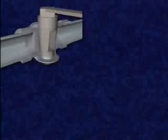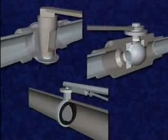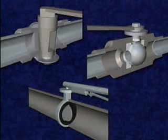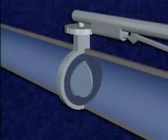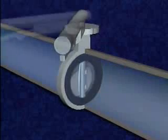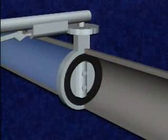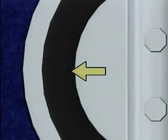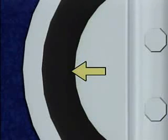Plug valves, ball valves, and butterfly valves share a distinctive feature: none of them has a disc that moves up and down from the valve seating area. Instead, each type has a disc that rotates. The rotating disc enables the valve to be opened and closed more quickly than many other types of valves. The valve seat for a plug valve, a ball valve, or a butterfly valve is usually made of a resilient material such as plastic or rubber, providing a firm fit and a tight seal when the disc closes on it.